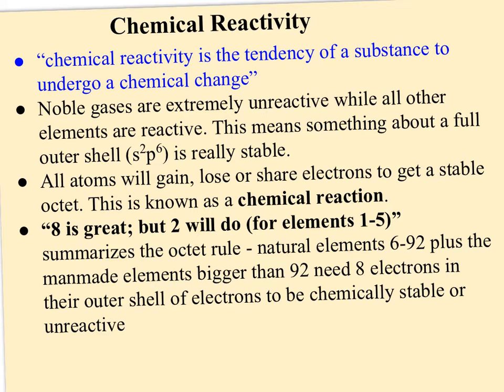So that means all other atoms tend to gain, lose, or share electrons to get this stable octet. And this is what we know as a chemical reaction. So I like to use the expression, 8 is great, but 2 will do for elements 1 to 5. That means for anything bigger than element number 5, boron, they're going to gain or lose electrons to have a full S and a full P orbital at whatever their biggest energy level is. So that basically summarizes the octet rule, that natural elements 6 to 92 need 8 electrons in their outer shell to be what we call chemically stable or unreactive.